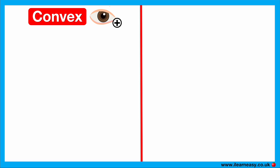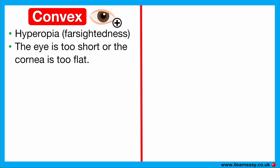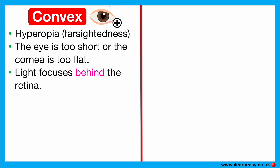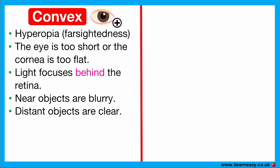Convex lenses are used for hyperopia, also known as farsightedness. The cause of hyperopia is that the eyeball is too short or the cornea is too flat, so light focuses behind the retina. As a result, close objects appear blurry, but distant objects appear clear.